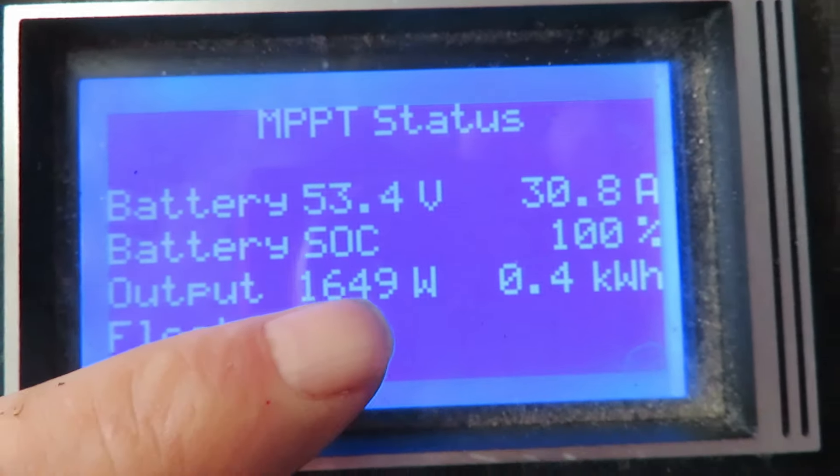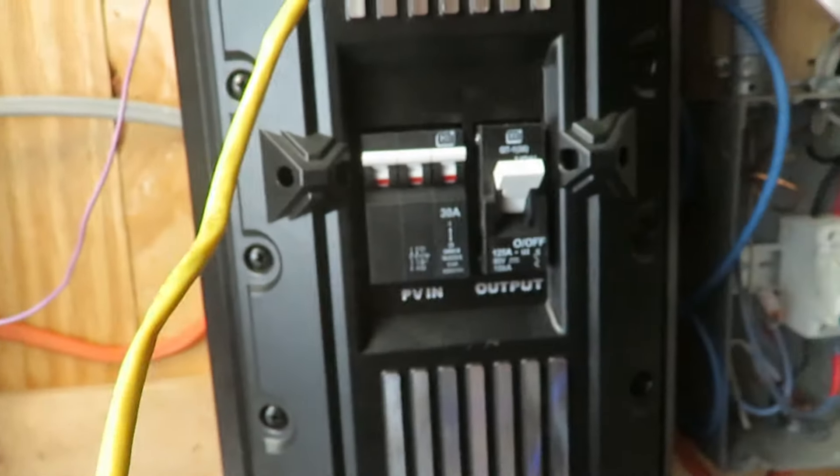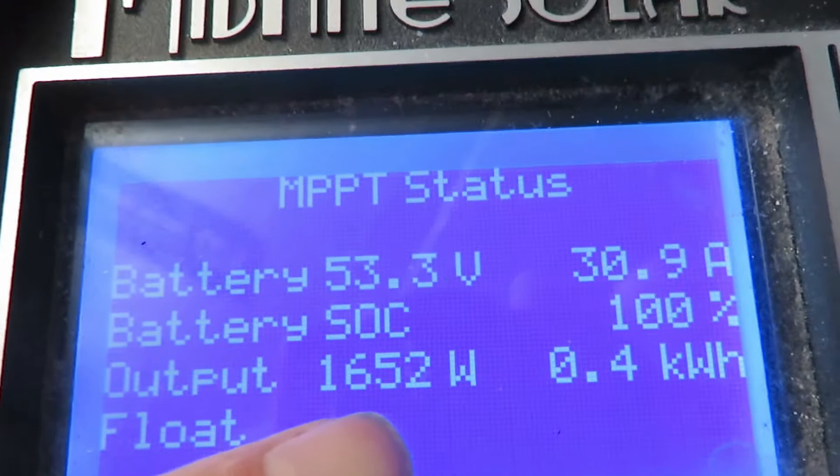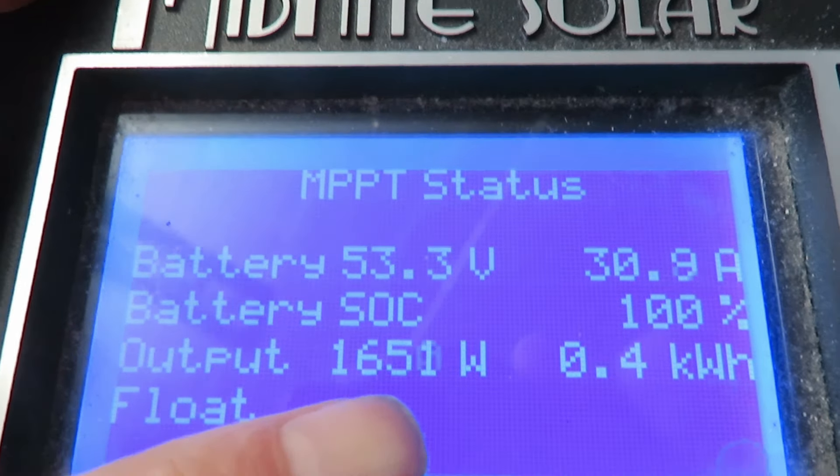So this is power coming out of the batteries. This is the power, the power coming from this controller. So that PV array, now instead of going to the baseboard heater, it's going to the inverter. You heard it kick on, this inverter here. So it's 1650 watts.